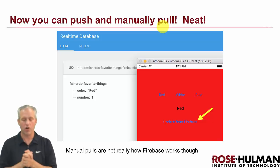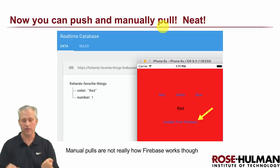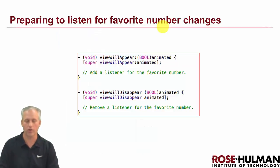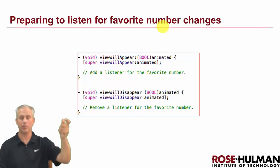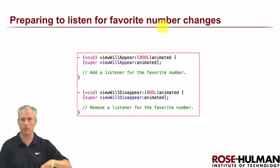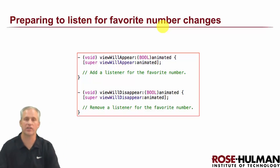Welcome back. This is the last part — we're going to do continuous listening, which is how Firebase is really supposed to work. One thing about continuous listening is you need to add observers and then you need to be responsible for removing them.